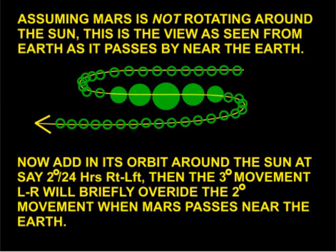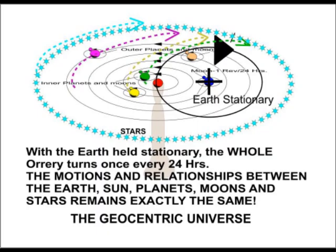What our evolutionary critics have forgotten is that observations of planets, moons, phases, or in this case, relative motions, simply cannot decide between the heliocentric model and the geocentric model.